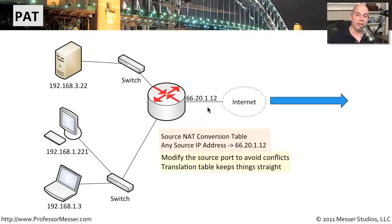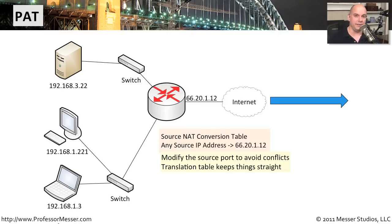The problem is you're talking across all of these different ports out to the internet, and this device now has to keep track of exactly where all three devices are communicating to. There could be conflicts between the source port numbers used across these devices, especially if you have thousands of devices. So what this device will do is change not only the outgoing IP address to 66.20.1.12, but also the source port number.